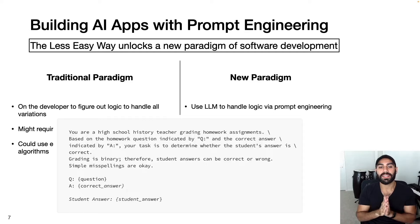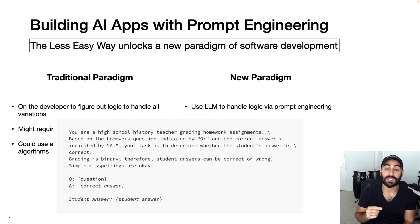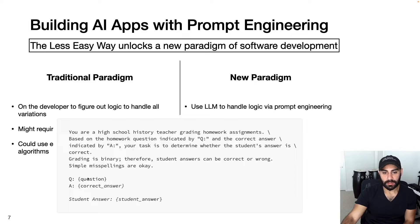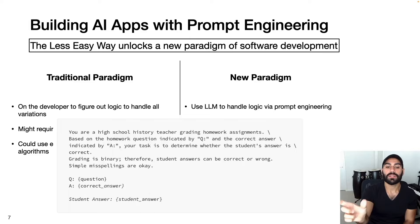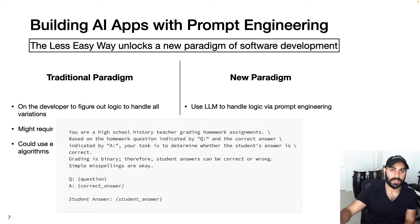Instead of writing exact or fuzzy matching code, you could just write a prompt. It might look like: 'You are a high school history teacher grading homework assignments based on the homework question indicated by Q and the correct answer indicated by A. Your task is to determine whether the student's answer is correct. Grading is binary — student answers can be correct or wrong. Simple misspellings are okay.' The curly brackets indicate where the question, correct answer, and student answer are dynamically inserted, and the language model generates a completion saying whether the answer is correct or wrong.